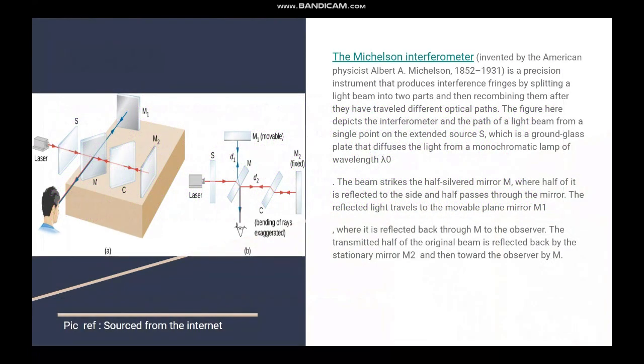The Michelson interferometer, as I said, was invented by American physicist Albert Michelson. It is a precision instrument that produces interference fringes by splitting a light beam into two parts and then recombining them after they have traveled different optical paths.